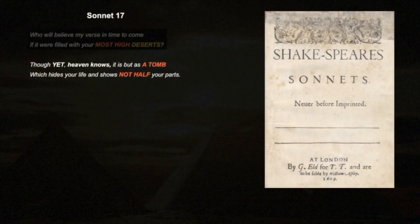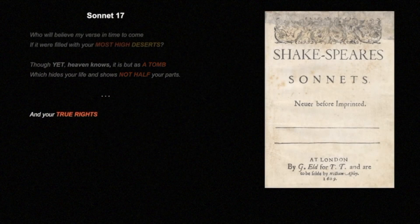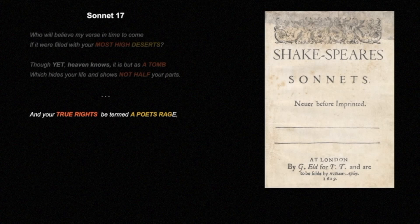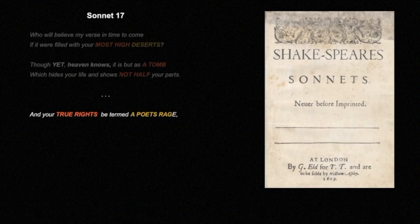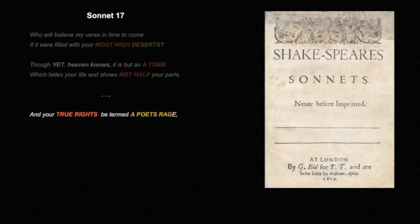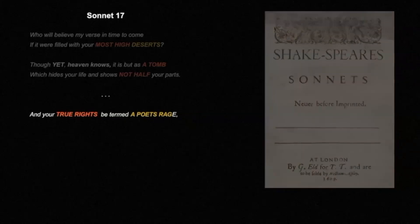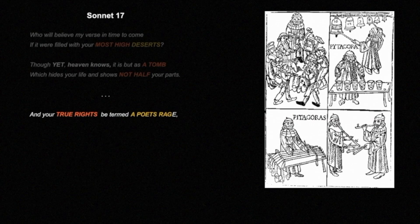Lines 11 and 12, he continues: And your true rights be termed a poet's rage. True is a Mason's term meaning to make level or square, ninety degrees. A right angle is, of course, precisely that: ninety degrees. Now think of right angles, and most of us can't help but think of Pythagoras.